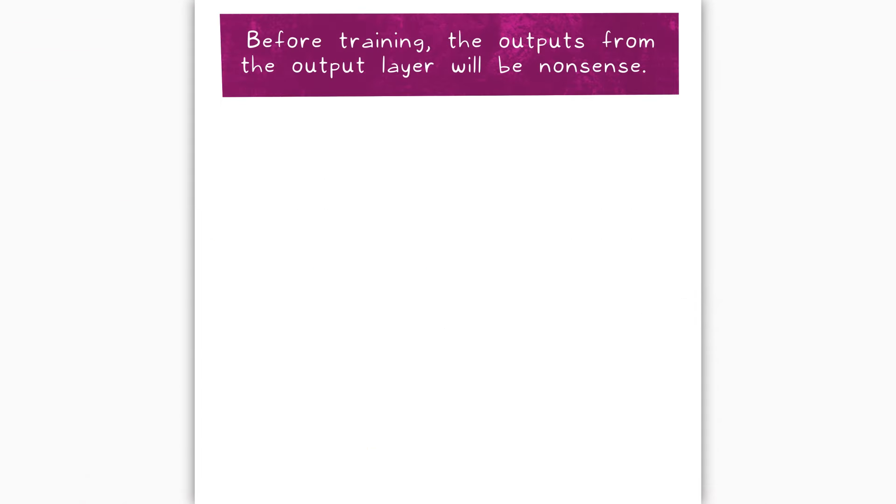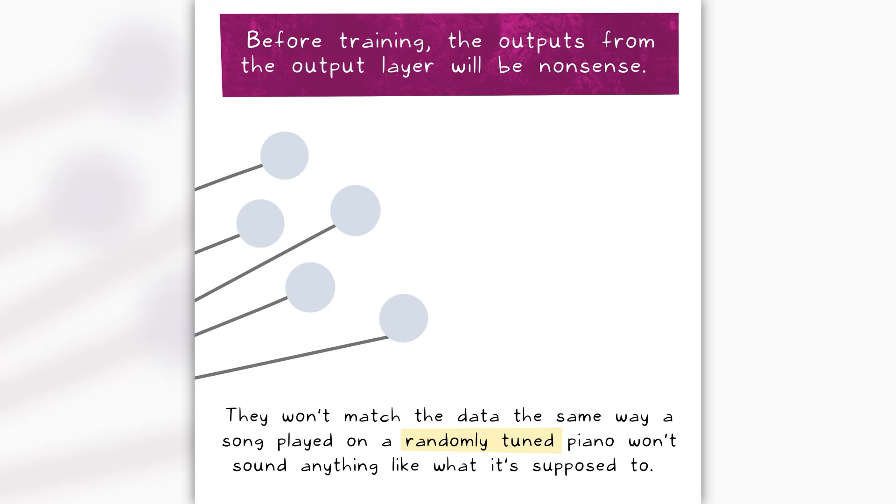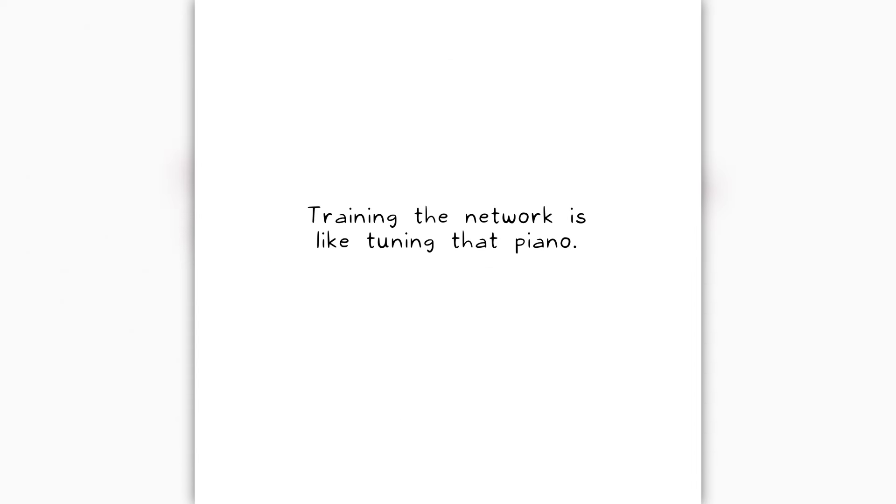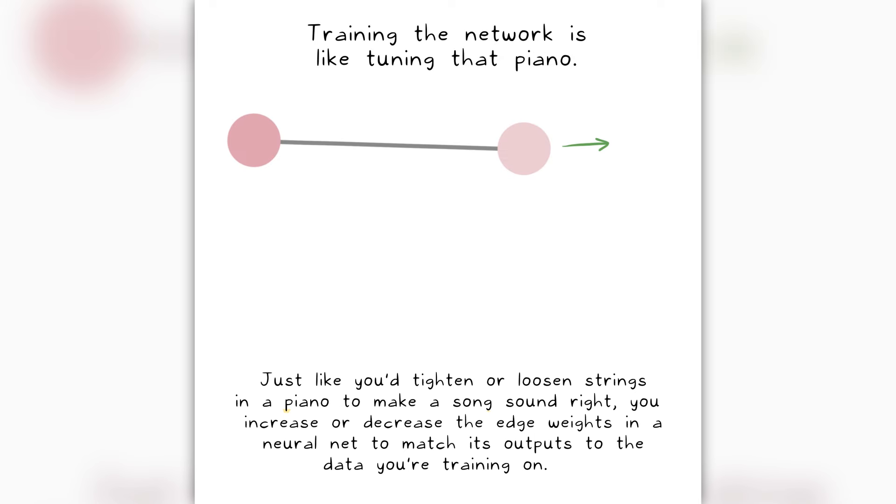Before training, the outputs from the output layer will be nonsense. They won't match the data, the same way a song played on a randomly tuned piano won't sound anything like what it's supposed to. Training the network is like tuning that piano. Just like you'd tighten or loosen strings in a piano to make a song sound right, you increase or decrease the edge weights in a neural net to match its outputs to the data you're training on.